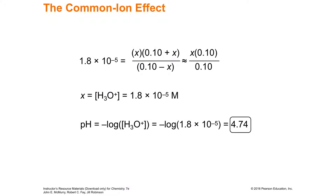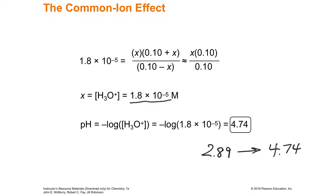To find the pH, take the negative log of the hydronium concentration: −log(1.8 × 10⁻⁵) = 4.74. Originally the pH was 2.89. After adding the common ion, you make less acid, and the pH rises to 4.74 — more basic, further from acidic. So you've become more alkaline by adding a common ion.